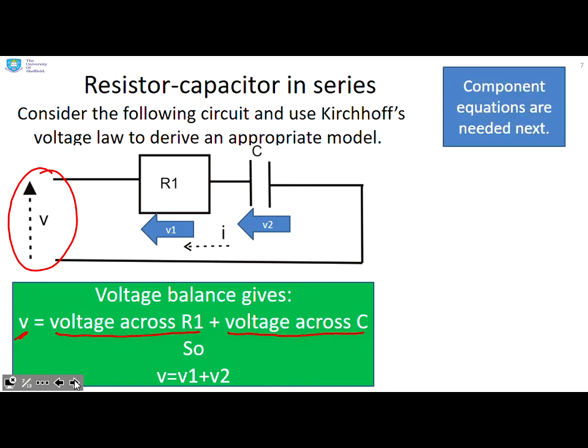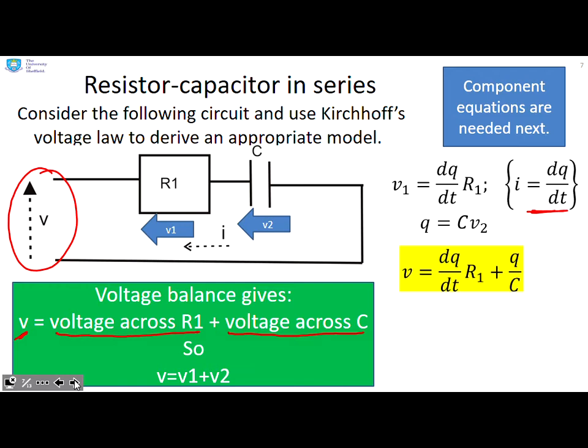We now go to the component equations and we see V1 is R1i, but we know that i is dq/dt, and because I know in advance, I'm going to write this as V1 equals R1 dq/dt. And q is going to be Cv2. So when we substitute those in to this equation, we end up with this model here, that V equals dq/dt times R1 plus q over C.